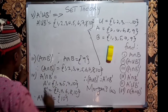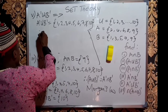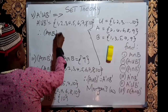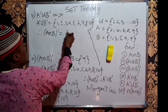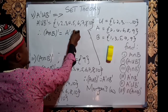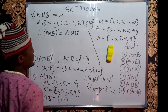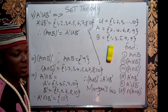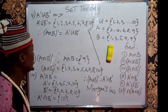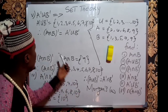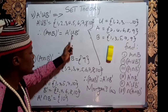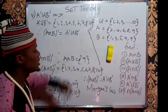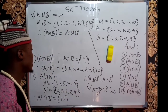When we found (A ∩ B)', we got 1, 2, 3, 4, 5, 6, 7, 8, 10 — which is equivalent to A' ∪ B'. So A' ∪ B' is equivalent to (A ∩ B)'. This is also part of De Morgan's Law of set theory: intersection turns to union, and the complement affects both sets.